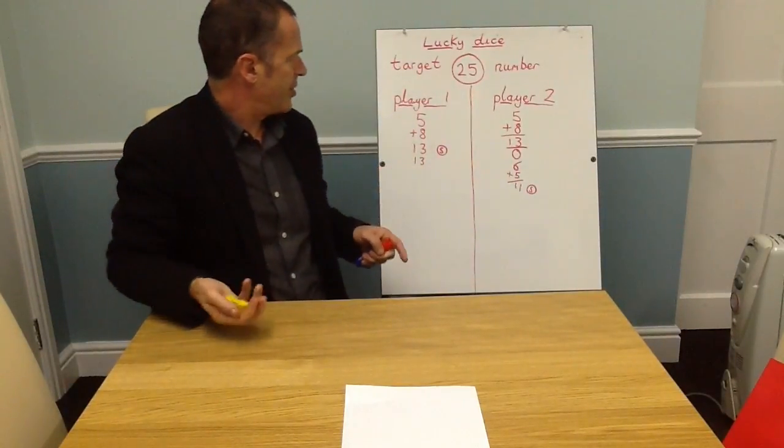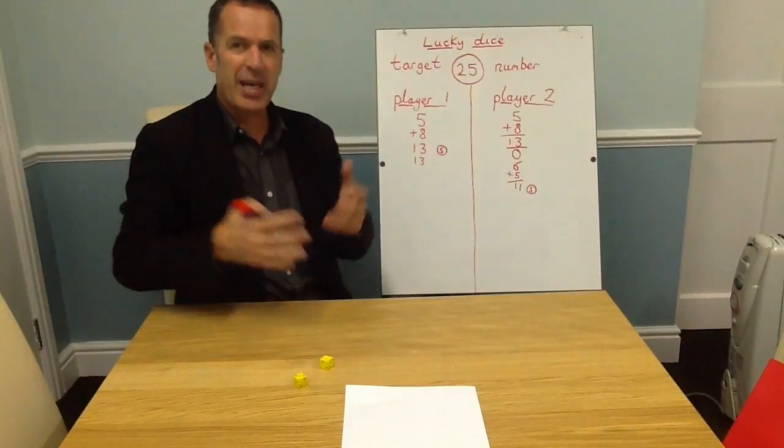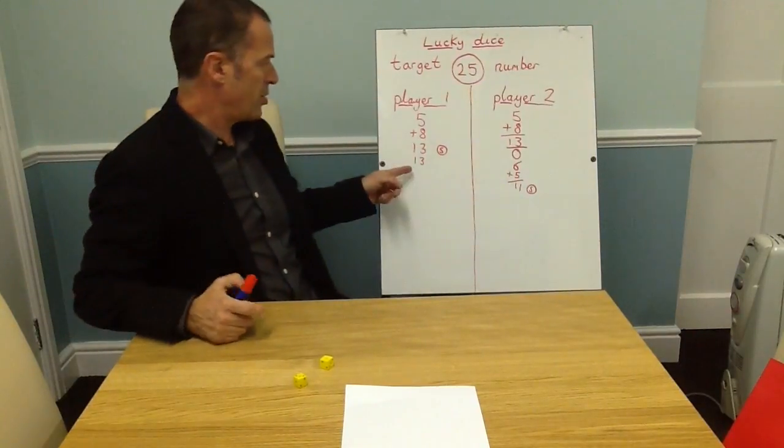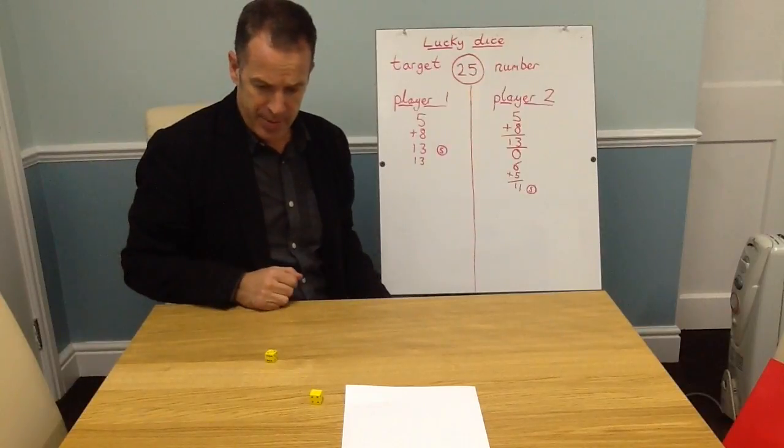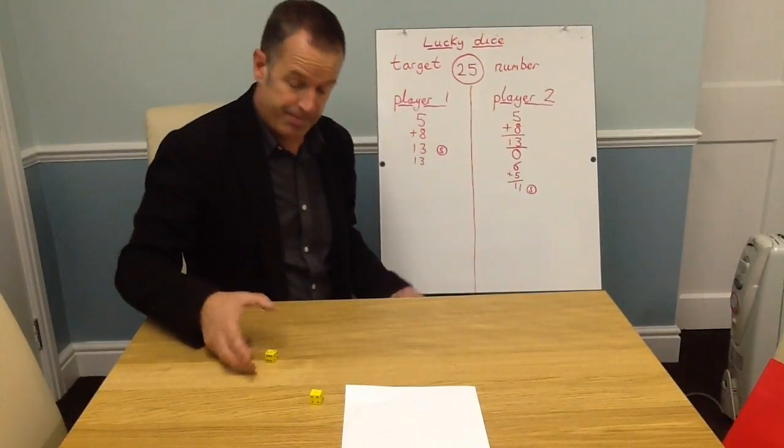Player two's turn. Three and a one as well. Nothing more. Back to player one. A two and a one. That's the end of my go. Player two's turn.